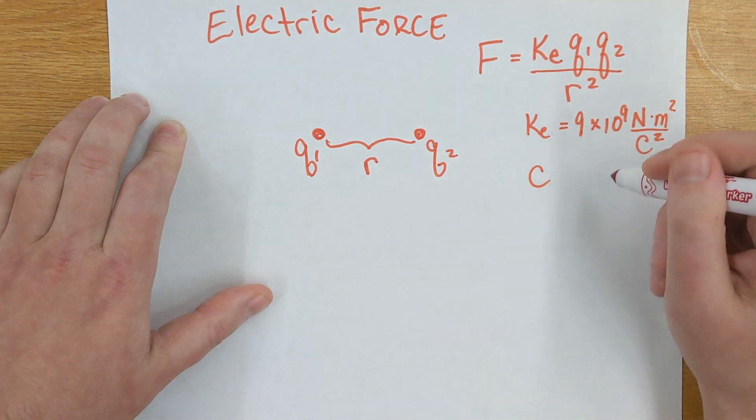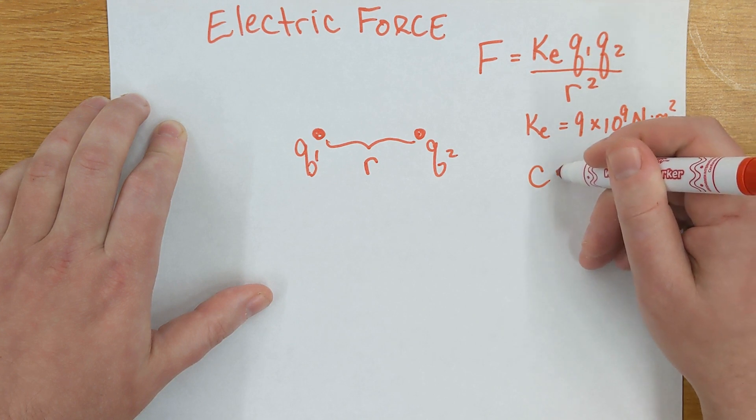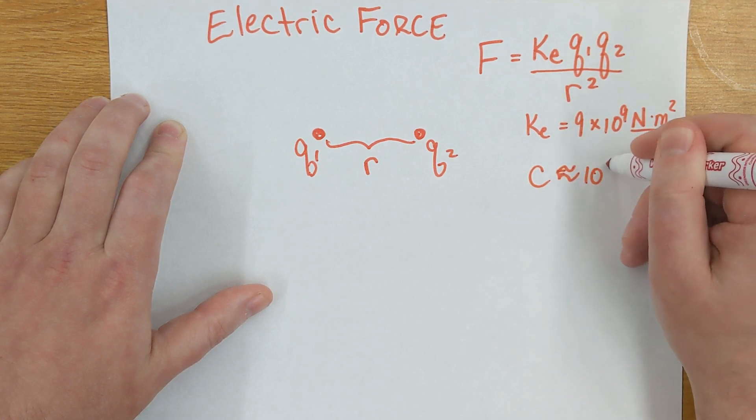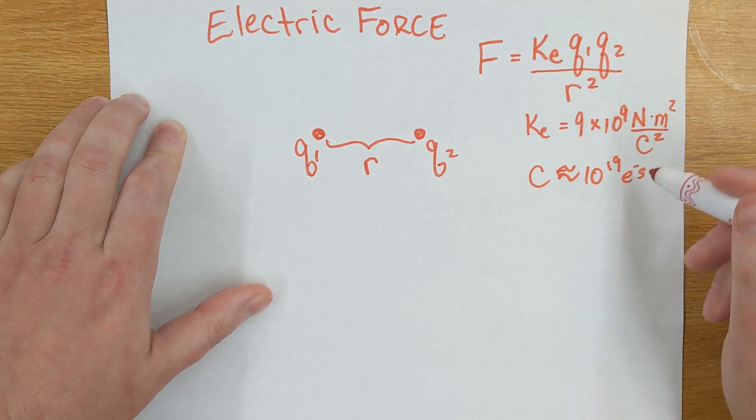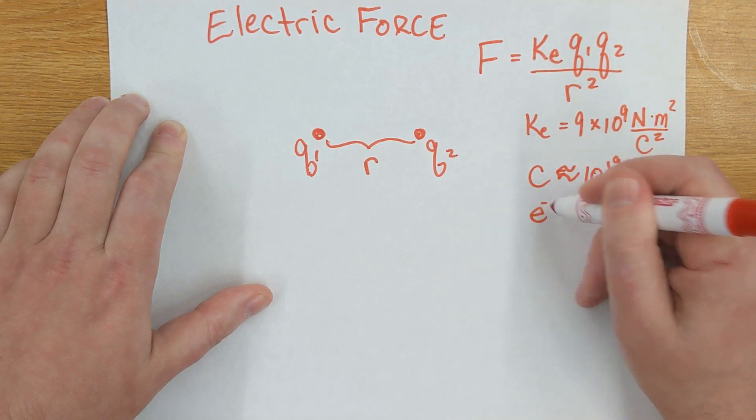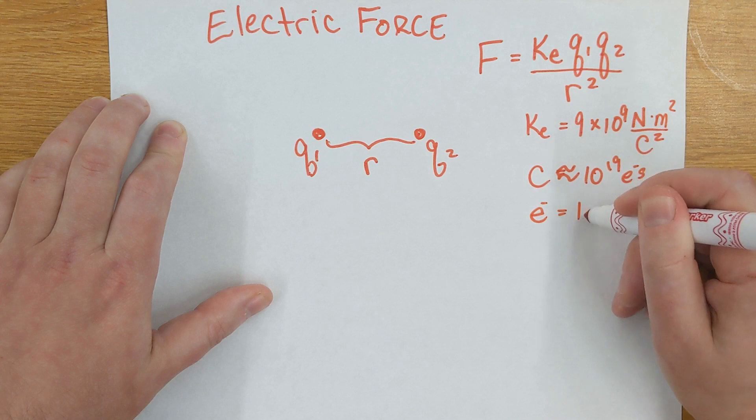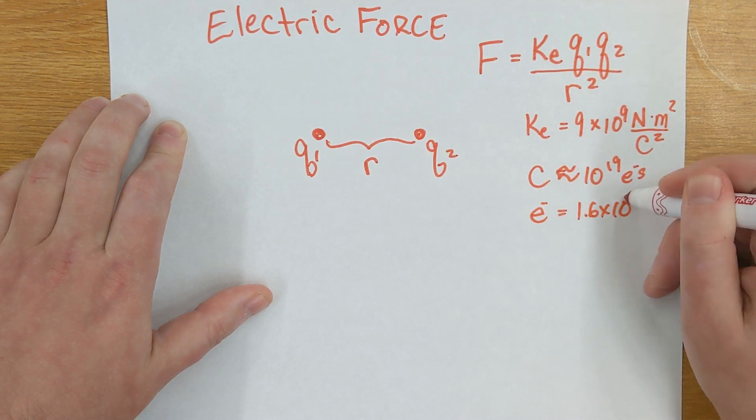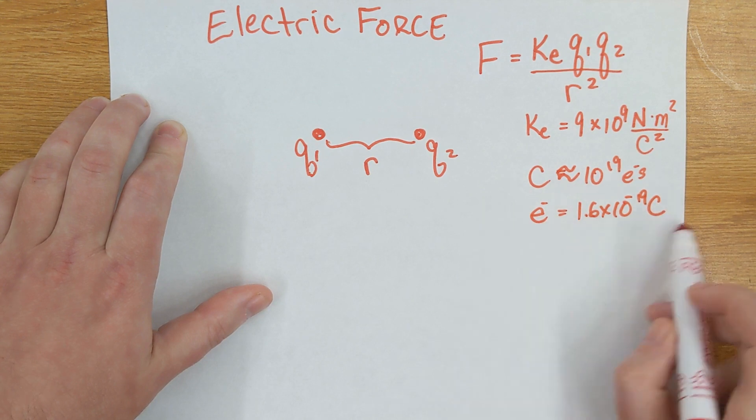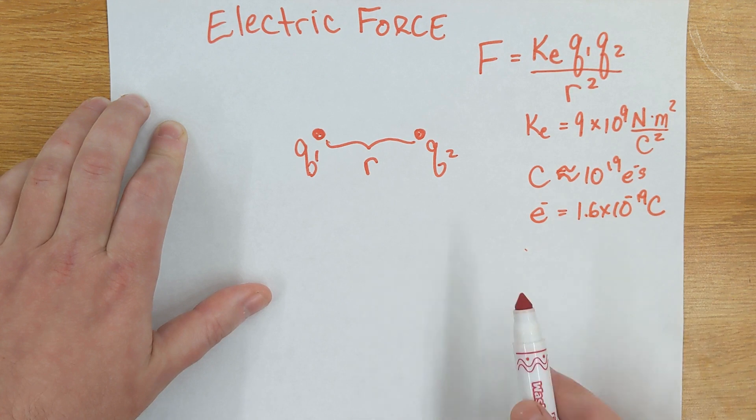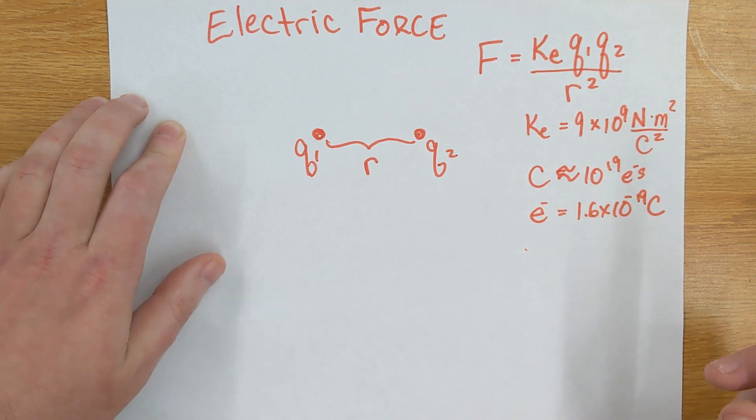How big is a Coulomb? You might or might not remember that a Coulomb is approximately 10 to the 19 electrons, but an electron, the electronic unit, is 1.6 times 10 to the negative 19 Coulombs. So the Coulomb is a pretty big unit compared to the kinds of charge we typically see around molecules, around atoms, and even in the lab we usually only see micro Coulombs of charge, or nanocoulombs.